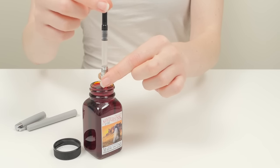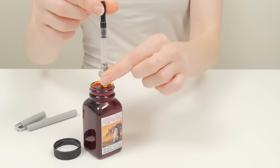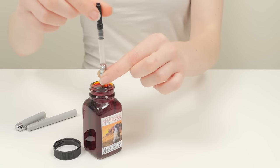Most converters have a twist knob that moves a piston up and down inside the converter to create the suction that draws ink into the pen. We'll show how to use other types of converters in just a moment. Twist the knob counterclockwise to lower the piston and expel air from the pen.